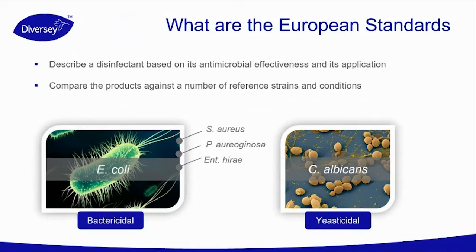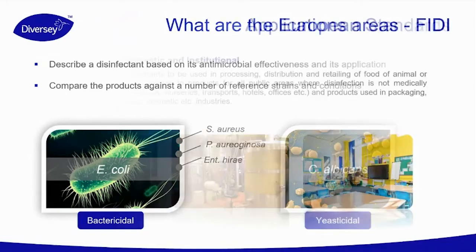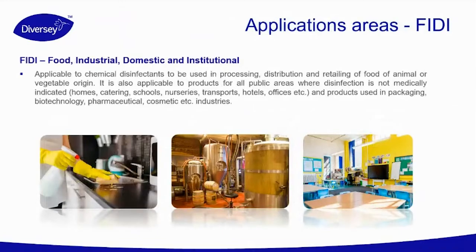There are many different application areas, but we're going to focus on two main ones. The first is FD — food, industrial, domestic, and institutional — applicable to chemical disinfectants used in processing, distribution, and retail of food of animal or vegetable origin, as well as products for all public areas where disinfection is not medically indicated, such as homes, catering, schools, nurseries, transport, hotels, offices, and products used in packaging.